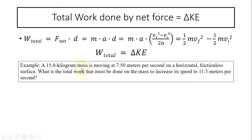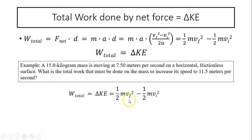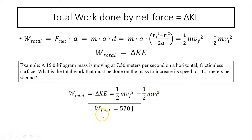Let's take a look at this example. A 15-kilogram mass is moving at 7.5 meters per second on a horizontal frictionless surface. What is the total work that must be done on the mass to increase its speed to 11.5 meters per second? Total work = ΔKE = ½(15)(11.5)² − ½(15)(7.5)². The total work done is 570 joules.